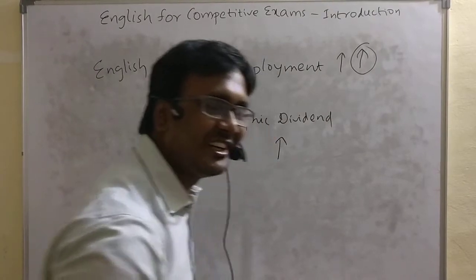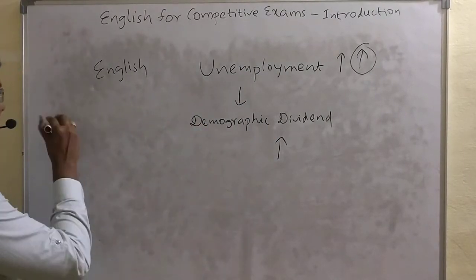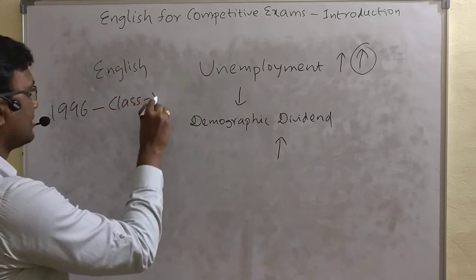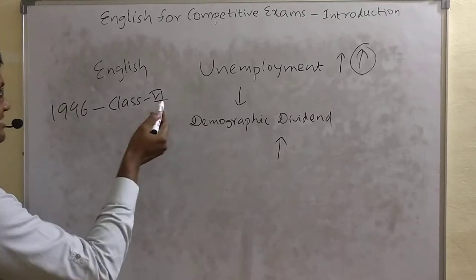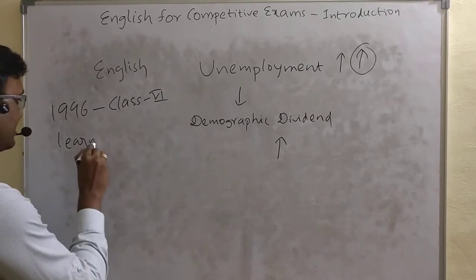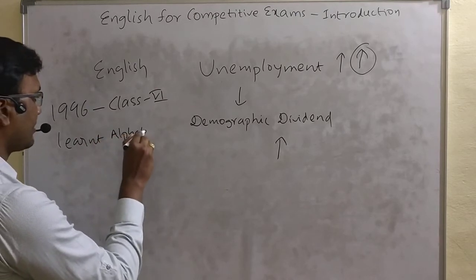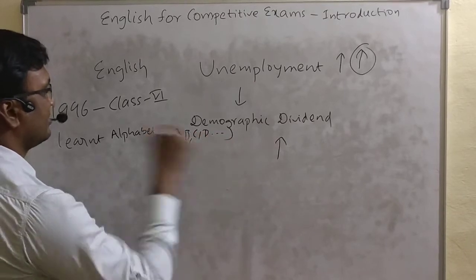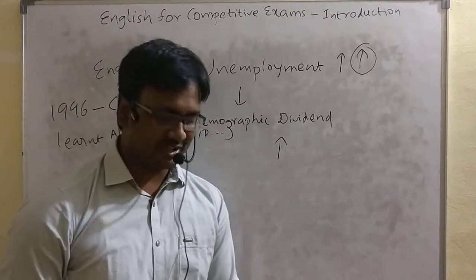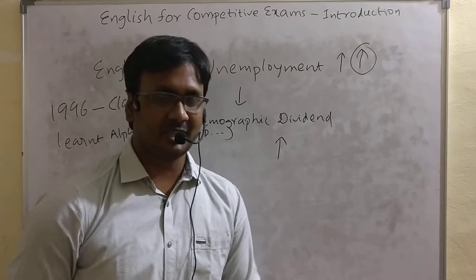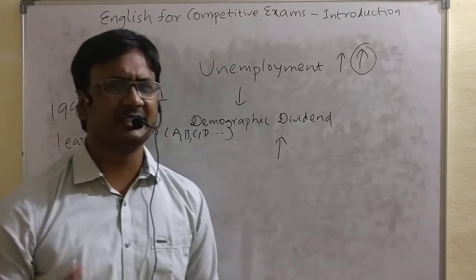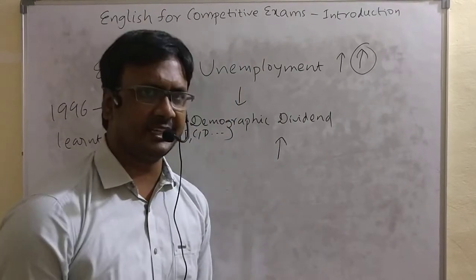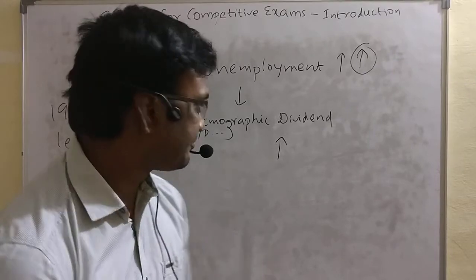My journey with English is an interesting one. I started in 1996 when I was in class 6. What happened in class 6 in 1996? I learned the alphabets — A, B, C, D. It was only in class 6 that I first had a chance to learn English alphabets. That's correct, because that's how the government school curriculum used to be those days. I studied in a government school in Telugu medium till class 10.